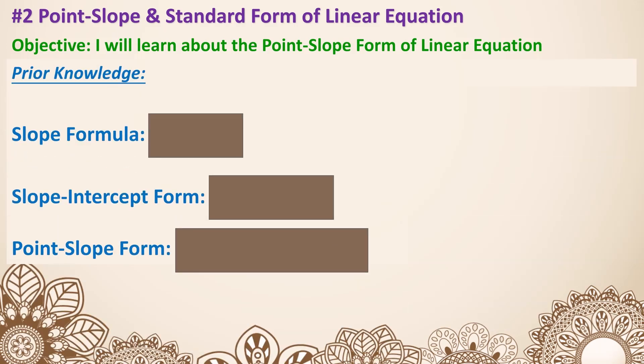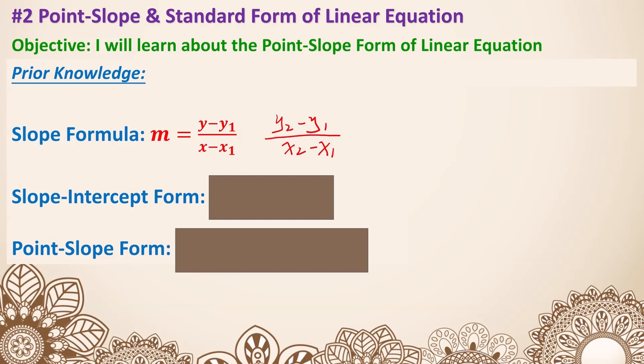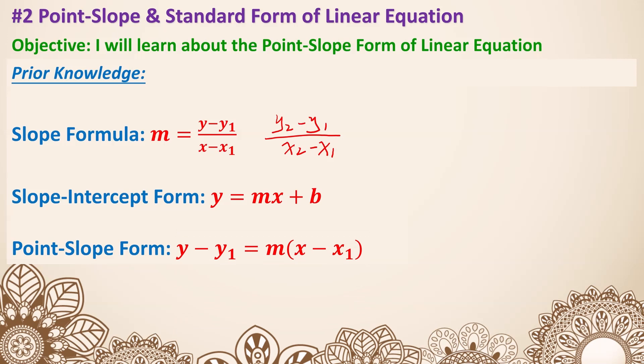First is the slope formula: m equals (y minus y1) over (x minus x1), or equivalently (y2 minus y1) over (x2 minus x1). Then we have slope-intercept form, y equals mx plus b, and point-slope form, y minus y1 equals m times (x minus x1).